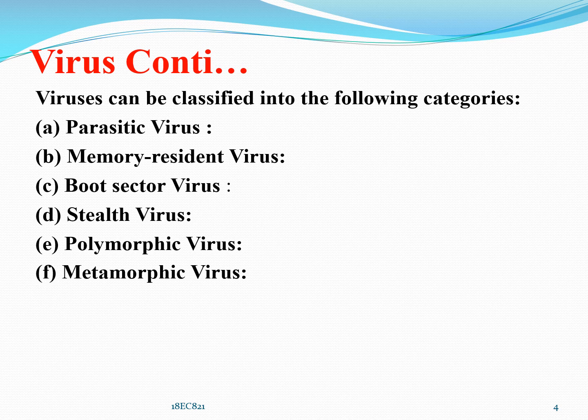Stealth virus: this virus has intelligence built in which prevents anti-virus software programs from detecting it. Polymorphic virus: a virus that keeps changing its signature — that is, its identity — on every execution. It is very difficult to detect. This type of virus keeps rewriting itself every time, making its detection very much harder.